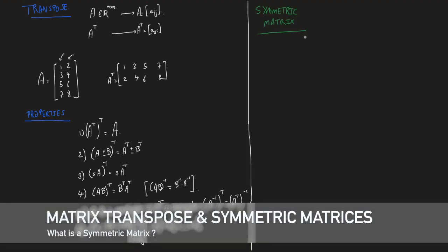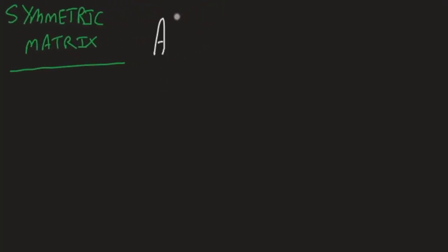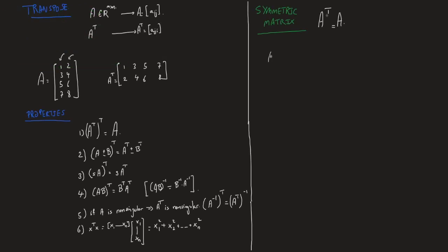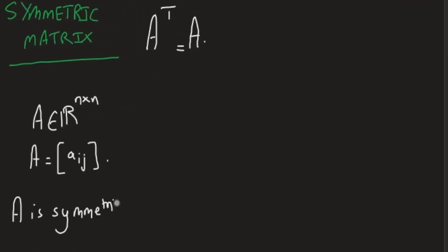Now since we define the transpose of a matrix, we can go ahead and talk about a specific class of matrices called the symmetric matrices. So when is a matrix symmetric? It is symmetric when A transpose is A. That is, the elements found on the upper diagonal part are equal to those on the lower diagonal part. So in other words, if A is a square matrix, where its elements is given by Aij, then A is symmetric when Aij is Aji for all ij and 1 down to n. This only works for square matrices. It cannot work for rectangular ones.